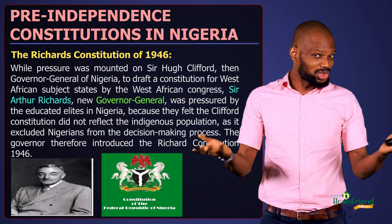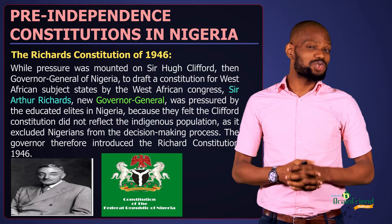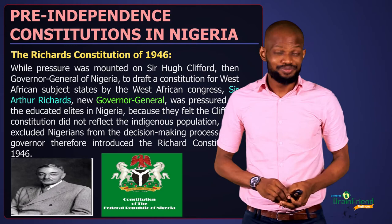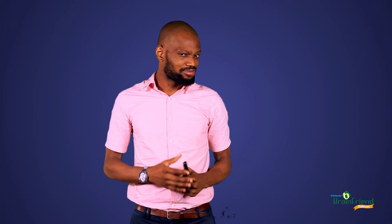Sir Richards, pressured by the elites, was forced to review the constitution and came up with a new one. The Richards Constitution of 1946 was prepared in 1945 but came into effect in 1946. The major change from previous constitutions was that it reduced the amount required to contest for public office from £100 to £50. We shall now look at some other features of the Richards Constitution and why it was eventually jettisoned.